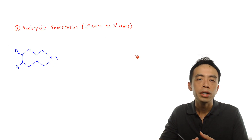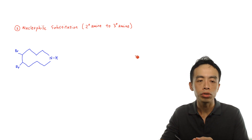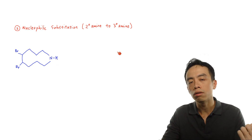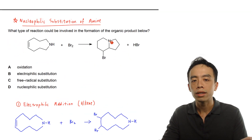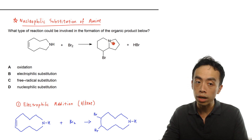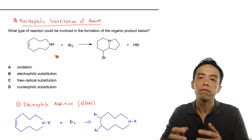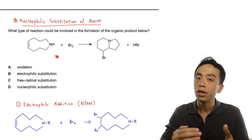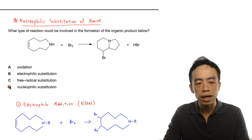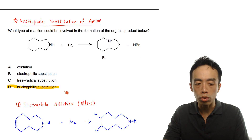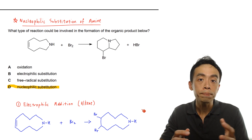The second step is the nucleophilic substitution of amine. Effectively, we are converting this secondary amine into a tertiary amine. If I compare this with the product in the question, this nitrogen is attached to three R-groups — so it is a tertiary amine. In the starting material, the nitrogen is attached to two R-groups — a secondary amine. The conversion of a secondary amine to a tertiary amine is a nucleophilic substitution, so the answer is option D, nucleophilic substitution.